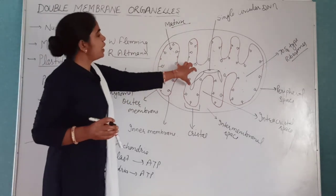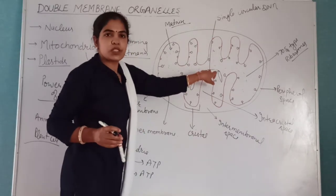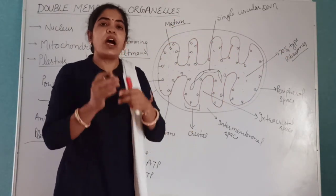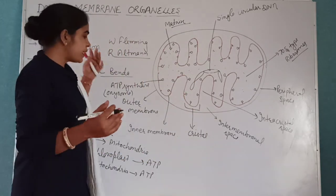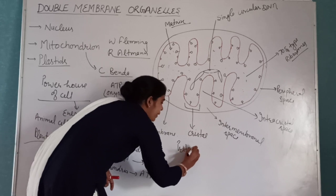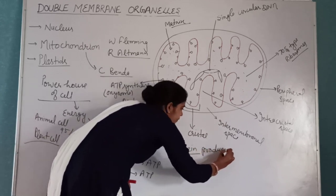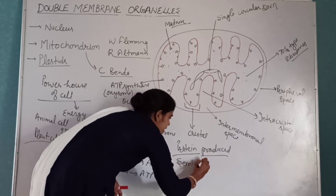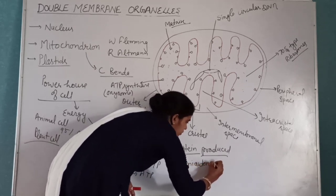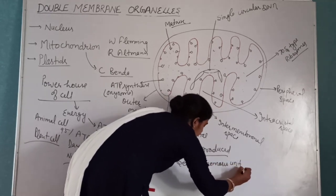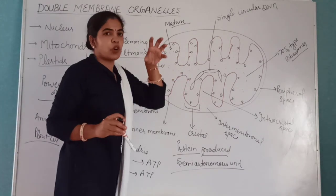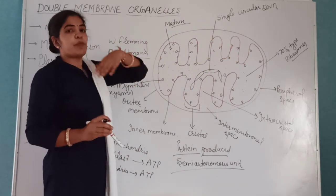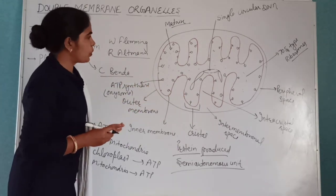Inside the matrix, single circular DNA is present. With the help of this single circular DNA and 70S ribosomes, mitochondria can produce half of the proteins they require. Because of this, mitochondria are called a semi-autonomous unit — semi meaning half, autonomous meaning self-regulating. It depends on the nucleus for the other half of its proteins.